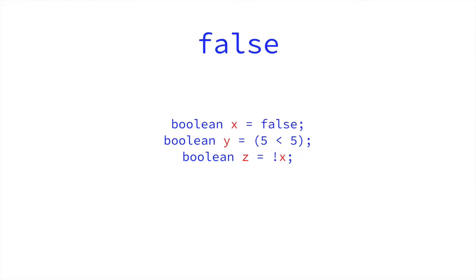The same applies for false. Here we have Boolean x equals false. We can do that directly. Boolean y is 5 is less than 5. 5 is not less than 5. It is actually equal to 5. And therefore y is also false.